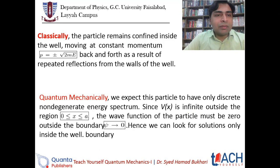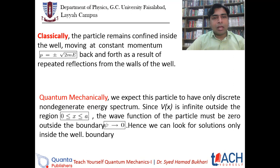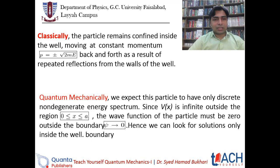The particle remains confined inside the well, moving at a constant momentum, because it will be moving with constant momentum p equal to plus or minus root of 2mE — plus or minus for the rightward or leftward directions of motion — back and forth as a result of repeated reflection from the walls of the well. Classically, the particle lacks sufficient energy to escape the box, so it continues to move back and forth.